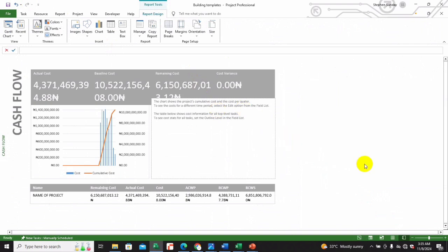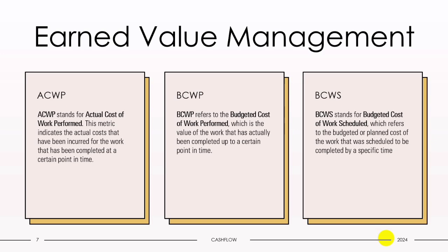Now let's look at ACWP, BCWP, and BCWS. ACWP stands for Actual Cost of Work Performed. This metric indicates the actual costs that have been incurred for the work that has been completed at a certain point in time. It is essentially the same as actual cost but specifically tied to the amount of work that has been finished. For example, if 60 percent of a task has been completed and six thousand dollars have been spent on labor and materials, the ACWP is six thousand dollars.